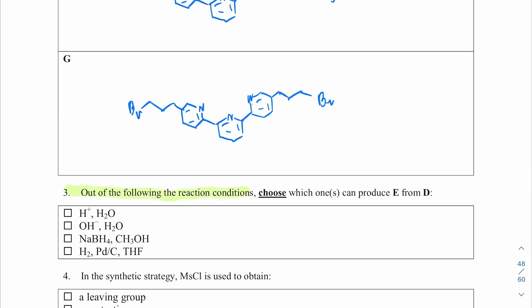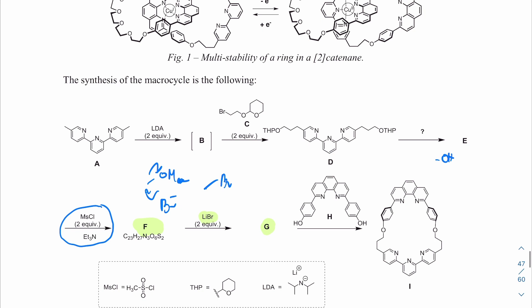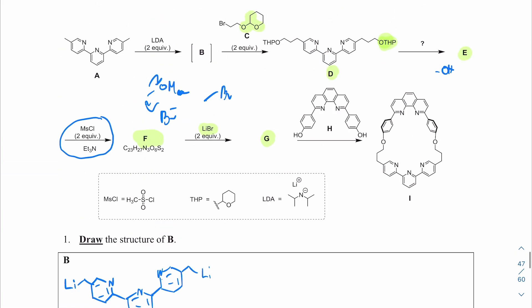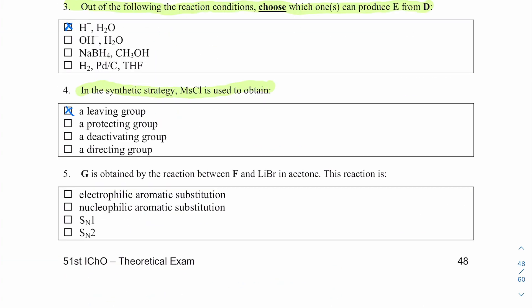Question three: choose which reaction conditions can produce E from D. E has a hydroxyl and D has a THP-protected version — that's an acetal. To cleave an acetal, simply put it in acidic aqueous solution. The correct answer is H⁺/H₂O. Question four: mesyl chloride is used to obtain a good leaving group, which is needed to introduce the bromide via lithium bromide. It's not a protecting group, not a deactivating group, and not a directing group.